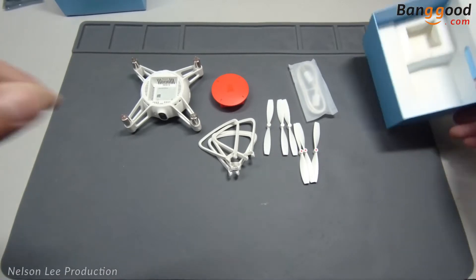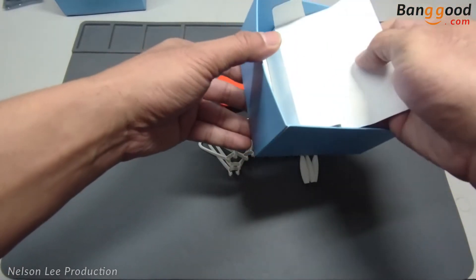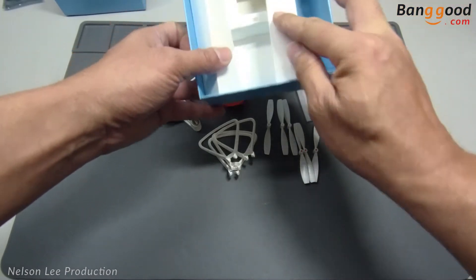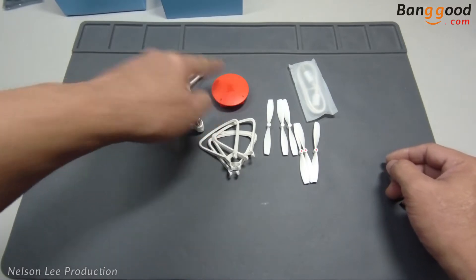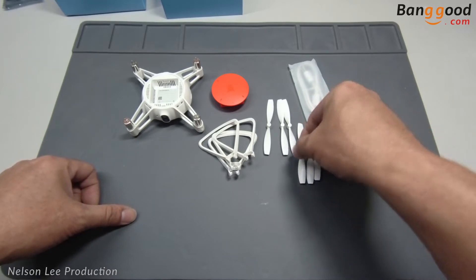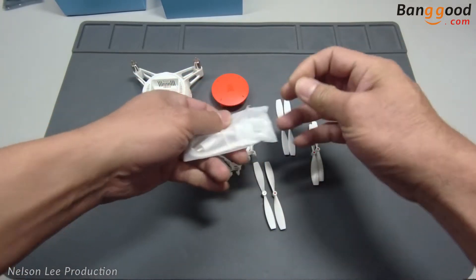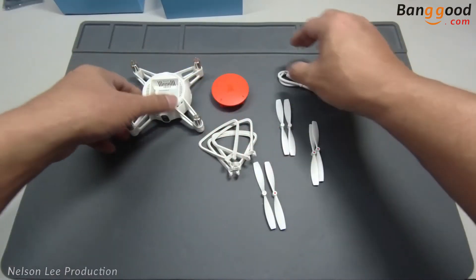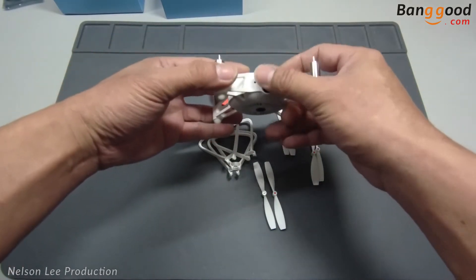Let's see if there's anything else inside. So far it's empty. Basically the box comes with a standard one battery, aircraft, propeller guard, one set of propellers and another two for spare. This is a micro USB cable to charge the battery, and it comes with a 720p camera.